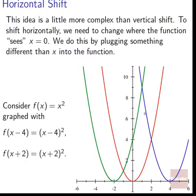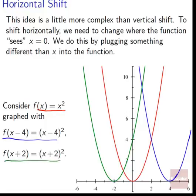Consider f(x) = x² in red, graphed with f(x − 4) = (x − 4)² in blue — it's been shifted 4 units to the right — and f(x + 2) = (x + 2)² in green, shifted 2 units to the left. That might seem counterintuitive: minus 4 shifts right but plus 2 shifts left.